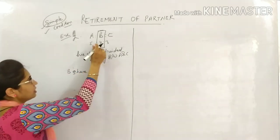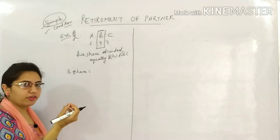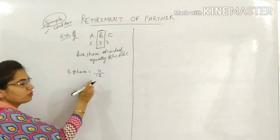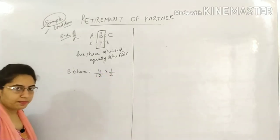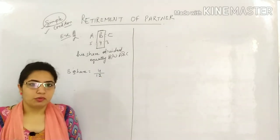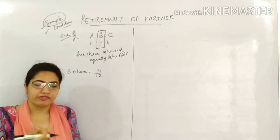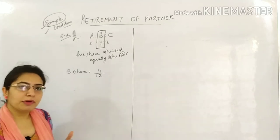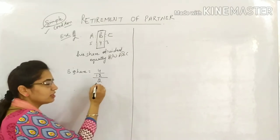The total is 5+4+3 = 12, so B's share is 4/12. Now this is to be distributed equally, so we halve it. Suppose you have 50 rupees and want to distribute equally to two people, you divide by 2 and give 25 each. Similarly here, B's share 4/12 is a fraction, so we halve it: that is 2/12 each to A and C.